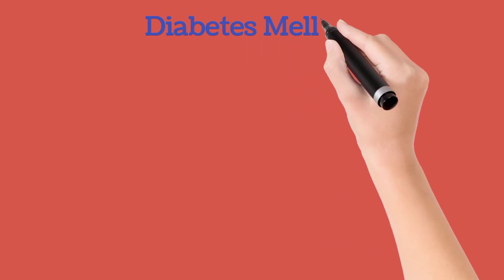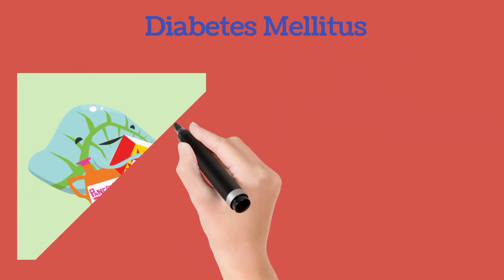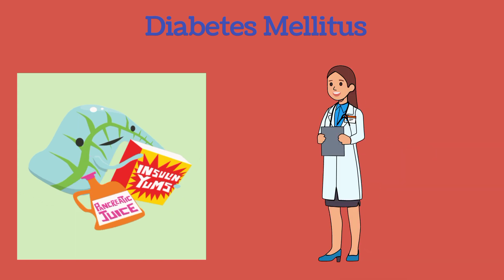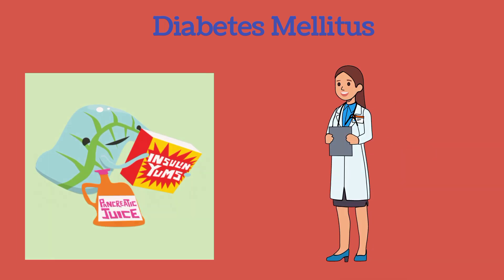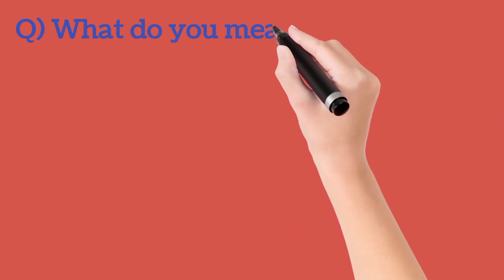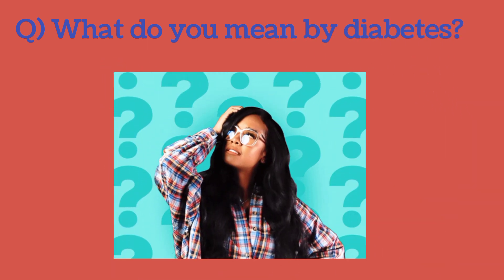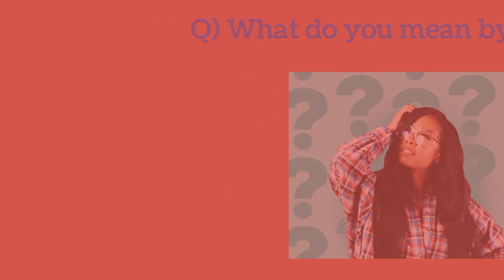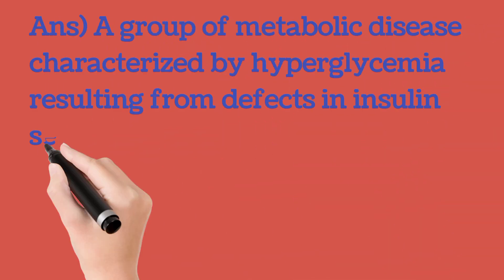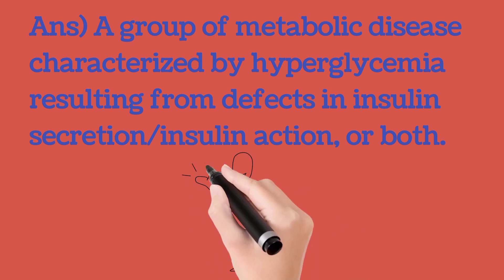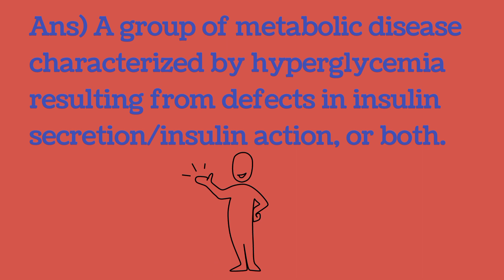Hello everyone, today our topic is diabetes mellitus in biochemistry. Firstly, we need to know what do you mean by diabetes. Simply, diabetes is a group of metabolic diseases characterized by hyperglycemia resulting from defects in insulin secretion, insulin action, or both.